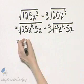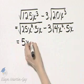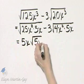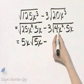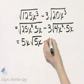The square root of 25 is 5, the square root of x squared is x, and then I have square root of 5x minus square root of 4 is 2, and 3 times 2 is 6.